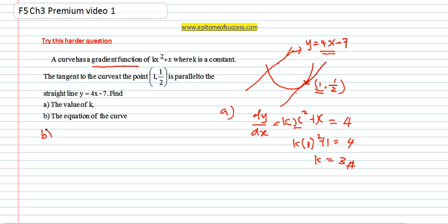Now question B says to find the equation of the curve. Remember this dy dx is the gradient. And you have found the k. So dy dx is 3x squared plus x. Now, to find the equation of the curve, which is the original curve, you have to inverse the dy dx. Because dy dx came from the original curve.